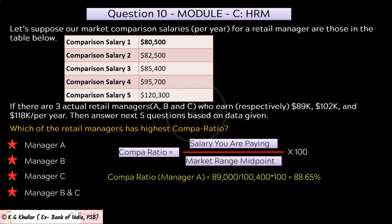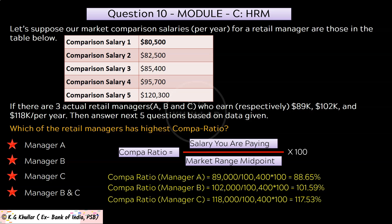The compa ratios of all three retail managers are calculated as follows. Manager A: $89,000 / $100,400 × 100. Manager B: $102,000 / $100,400 × 100 = 101.59%. Manager C: $118,000 / $100,400 × 100 = 117.53%. Note that the market range midpoint of $100,400 was already calculated in the previous question.